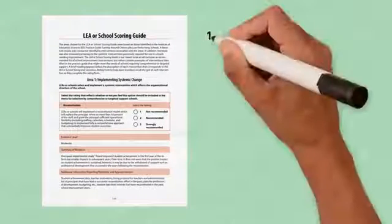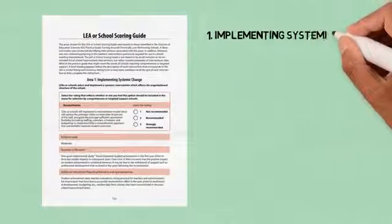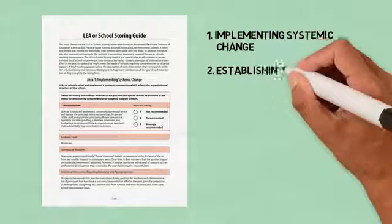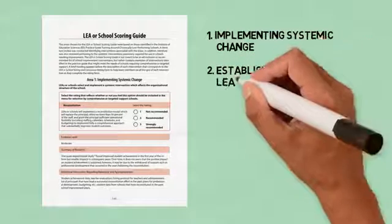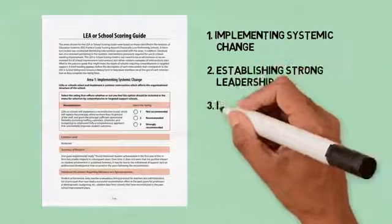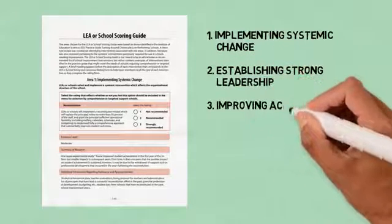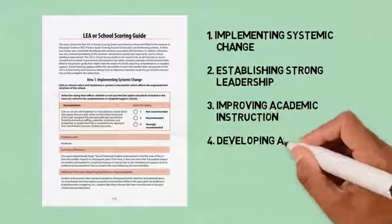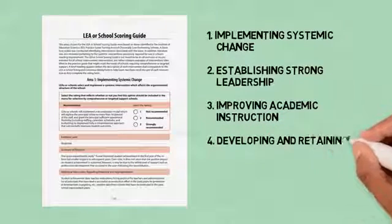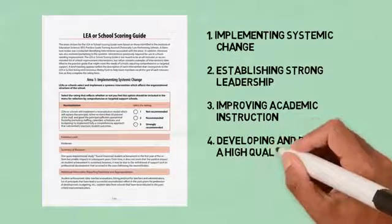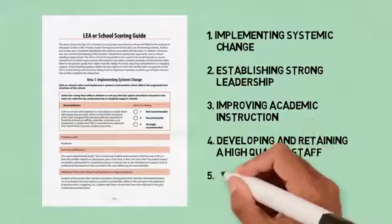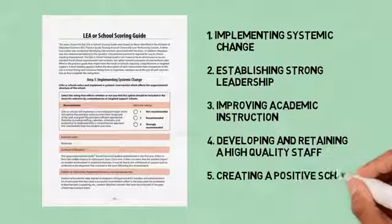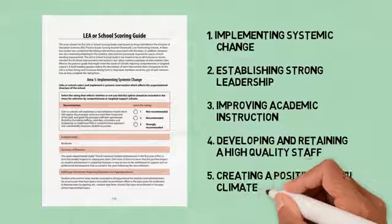These five areas include implementing systemic change, establishing strong leadership, improving academic instruction, developing and retaining a high quality staff, and creating a positive school climate and culture.